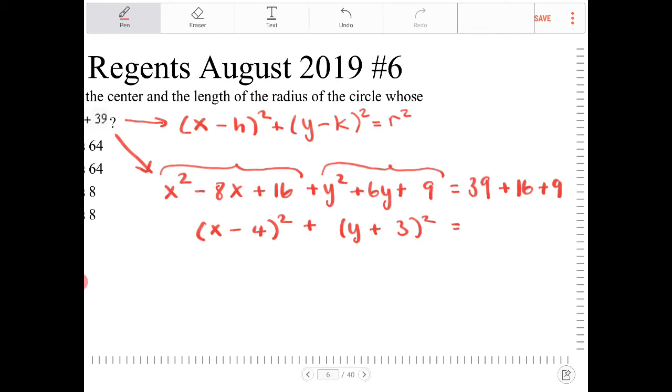And then on the right-hand side, 39 plus 16 plus 9, what is that? That's equivalent to 39 plus 25, which is equal to 64. And this is the same thing as 8 squared. So I'm looking at an equation that is x minus 4 squared plus y plus 3 quantity squared. The center is 4 comma negative 3, and the radius is going to equal 8.